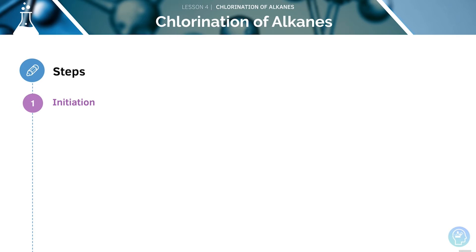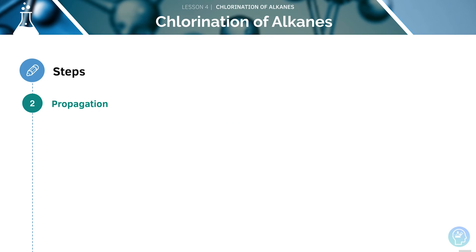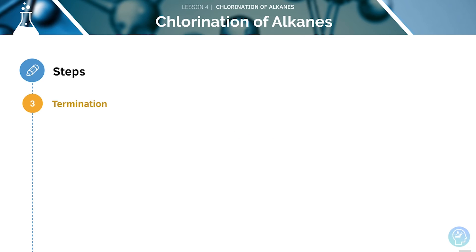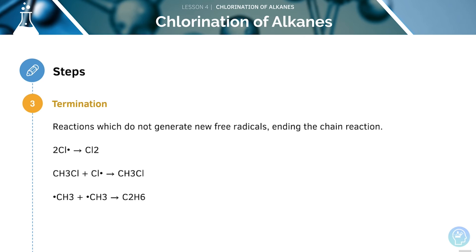The first step is initiation. This is when a free radical is formed by homolytic fission. The next step is propagation, when the reactions produce new free radicals which go on to continue the chain. The final step is termination. These are reactions which do not generate free radicals, and therefore end the chain reaction.